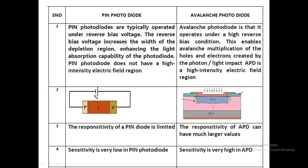There are certain parameters which are very important for a photodetector, such as responsivity, quantum efficiency, and response time. Based on all these requirements, two types of photodetectors are designed.